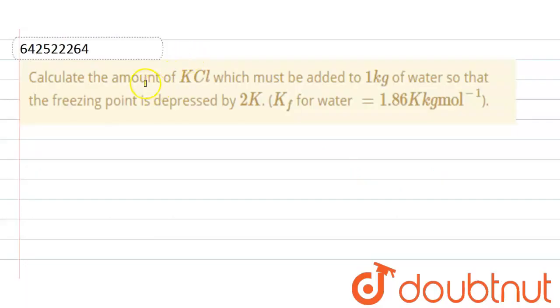Hello everyone, here the question is: calculate the amount of KCl which must be added to 1 kg of water so that the freezing point is depressed by 2 Kelvin.